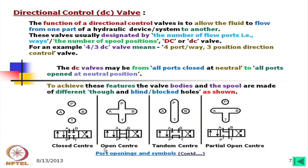The fully open-center valve at neutral position is fully open, represented by a plus-sign arrangement where A, P, B, and T are all interconnected at neutral. Others are the same as the closed center. Next is the tandem center: at neutral position, the pressure port is connected to the tank port to save energy — the flow at ideal condition goes directly to tank. The partial open-center valve has only the pressure port closed at neutral position, while the other three ports A, B, and T are interconnected.